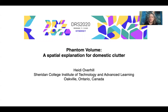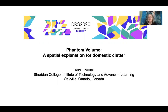Hi, I'm Heidi Overhill and this is a presentation for the paper titled Phantom Volume: A Spatial Explanation for Domestic Clutter. This paper is an exploration of what it means for a product to have a shape. We're going to talk about positive form and negative space, and introduce the idea that there's a third type of space called Phantom Volume, which is created when products move.